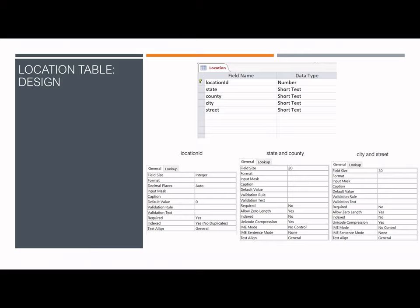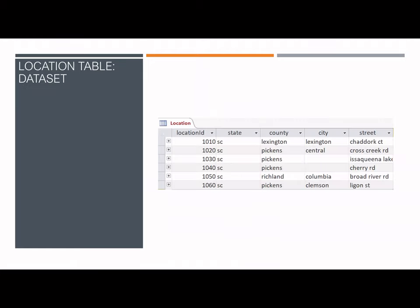The design view of the location table shows location ID as the primary key, expressed by a number with no duplicates. The state and county attributes are expressed by up to 20 characters of text and neither are required. The city and street attributes are also not required and are expressed by up to 30 characters of text. The datasheet view shows the four-digit location ID; only some records have the city attribute, but street and county are included in each record.